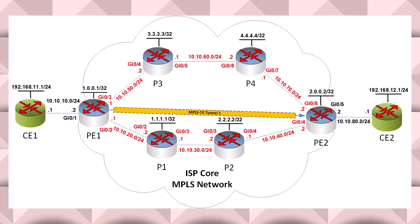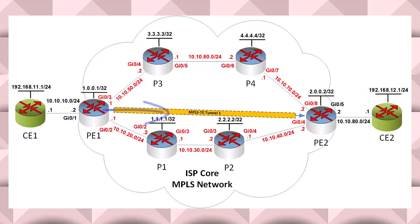Now let's say we want to reach our CE2 router loopback, which represents the customer network behind that router, from PE1, but we want to use the already established LSP. How would we achieve that? We would need to create a static route, but before we do let's take a look at our tunnel configuration to remember what we had configured.